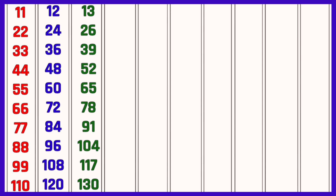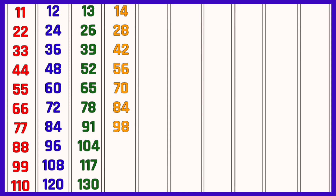Table of 14: 14 ones are 14, 14 twos are 28, 14 threes are 42, 14 fours are 56, 14 fives are 70, 14 sixes are 84, 14 sevens are 98, 14 eights are 112, 14 nines are 126, 14 tens are 140.